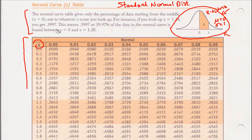So let me continue. This table gives the percentage of data starting from the middle, Z equals zero, out to whatever Z score you look up. So, for instance, if you look up 1.28, and we'll go down here, here's 1.2.